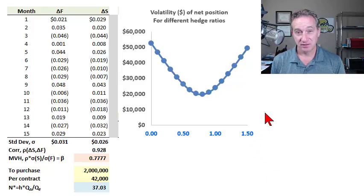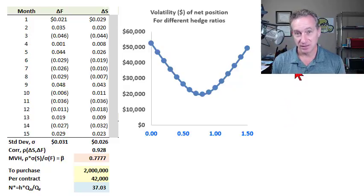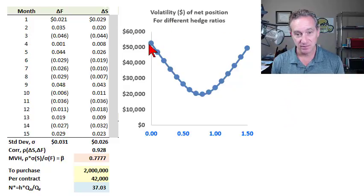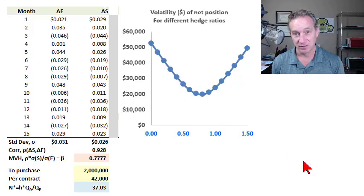The minimum variance hedge is the hedge position that, when combined with the underlying exposure, produces a net portfolio that minimizes the variance or volatility of the net portfolio.